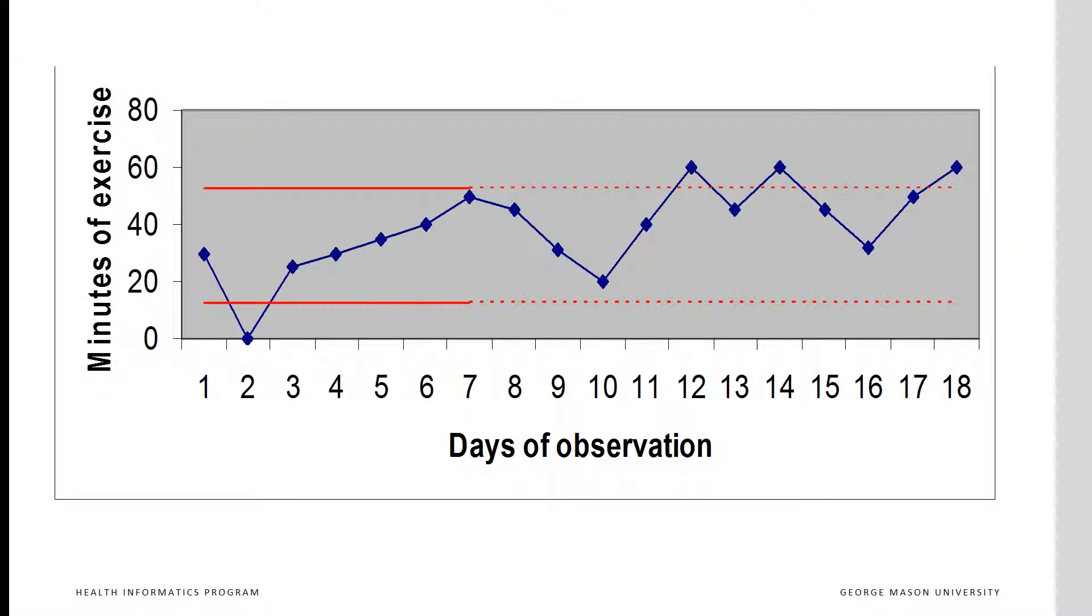Examination of the control chart shows that in the first seven days, there was one very low point of no exercise, a statistical abnormality. After the first seven days, used for setting the limits on three occasions, the total exercise time exceeded the upper control limit. In these three days, there was a real increase in exercise time compared to the first seven days. If these days correspond to joining the volleyball team, then the intervention seems to have worked.